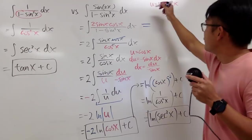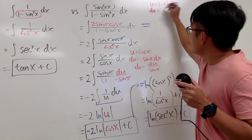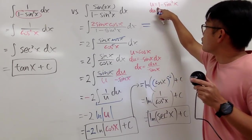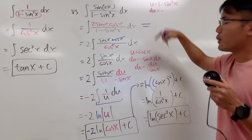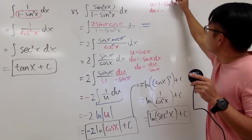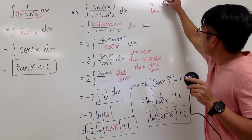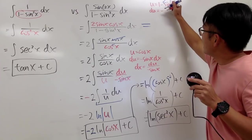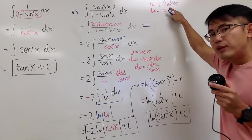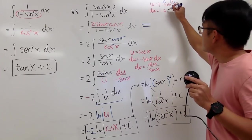In this case, differentiating both sides, I get du equal — the derivative of 1 is 0, so that's gone. But be sure you do the power rule first: bring the 2 to the front. So we have 2, and you maintain the sine x.